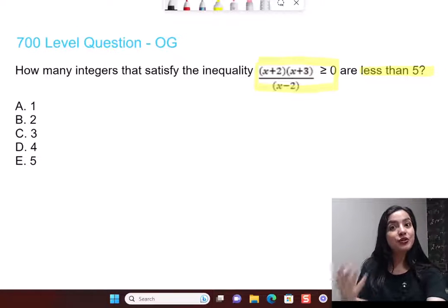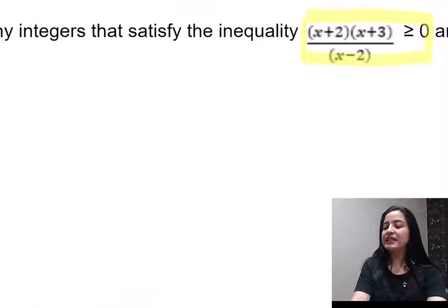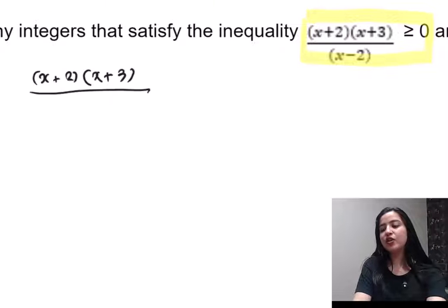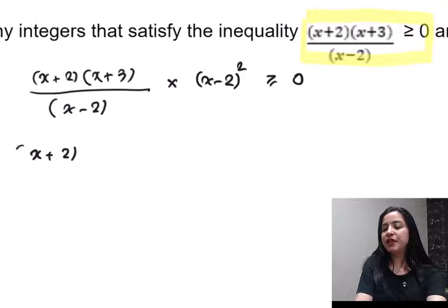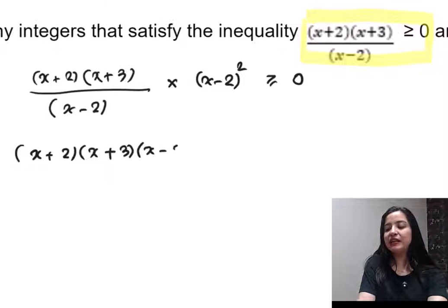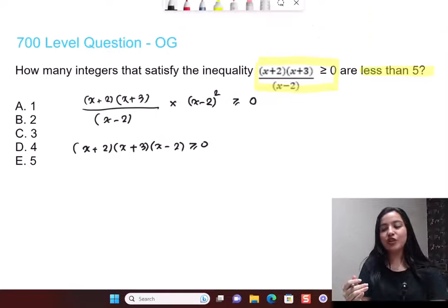Right now, I'm going to do that for you. We simplify this inequality by multiplying both sides of the inequality by the square of the denominator. So I'm going to multiply by (x - 2)² on both sides. Right side will stay 0. So left side after simplification is just going to be the product of these three things. And this is (x - 2). This whole thing greater than or equal to 0.